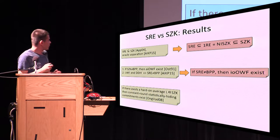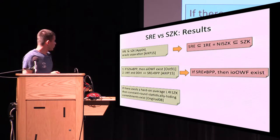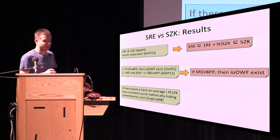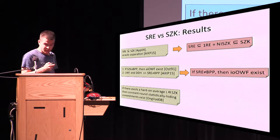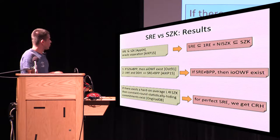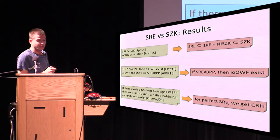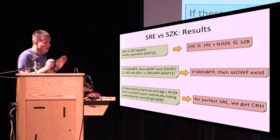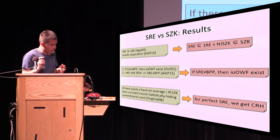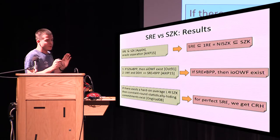Finally, we continued the work of Ong and Vadhan. They showed that if there exists a hard-on-average language in SZK, then there exist constant-round statistically hiding commitments. We got an analogous result for SRE: if you substitute SZK with SRE, you get collision-resistant hash functions. It's technically a variant of SRE — we call it perfect SRE — but essentially think of it as SRE.